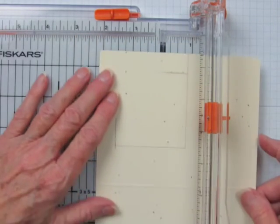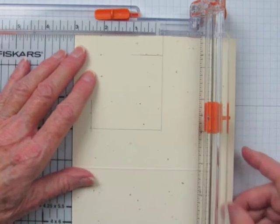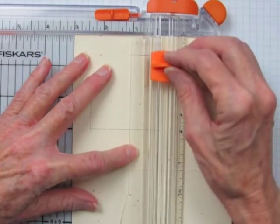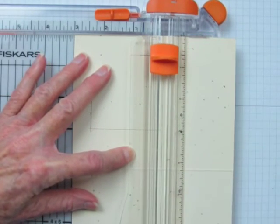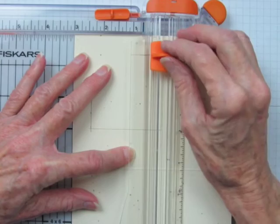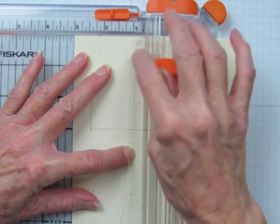Next, I will turn the cardstock a quarter turn and place the blade at the 5 eighths inch mark on this side.